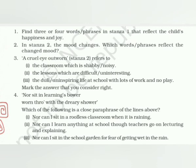Now coming to working with the poem on page 85. Question one: find three or four words or phrases in stanza one that reflect the child's happiness and joy. The first paragraph is all about positivity. You can pick: 'love to rise,' 'birds sing on every tree,' 'skylark sings with me,' 'the distant huntsman winds his horn,' 'sweet company.' These words and phrases depict happiness and joy in the first paragraph.